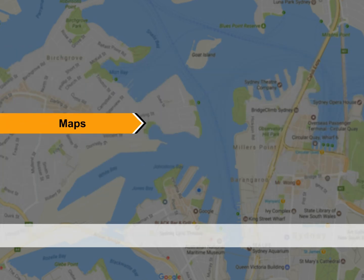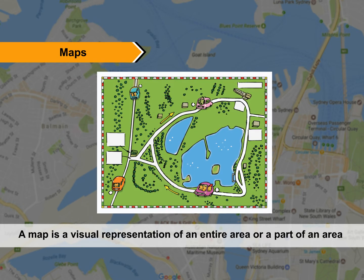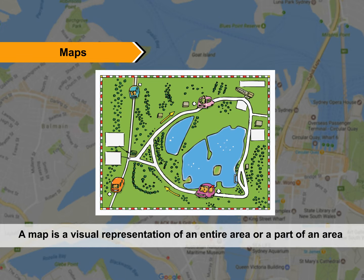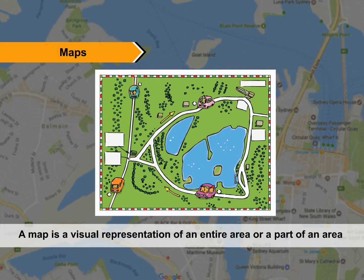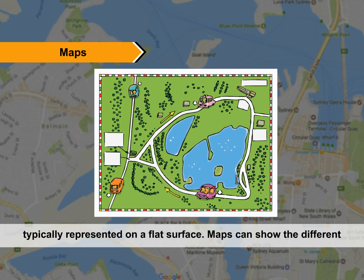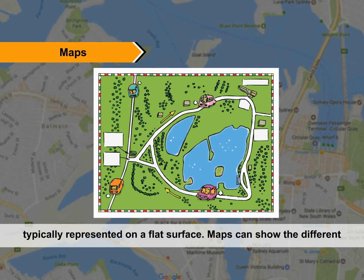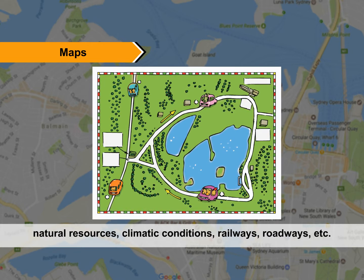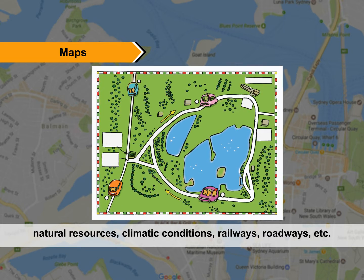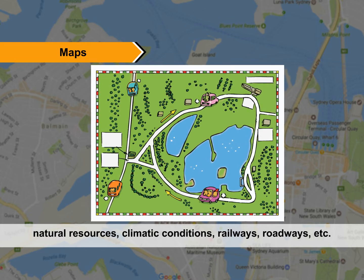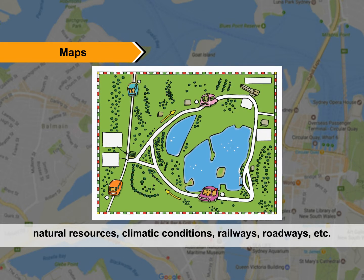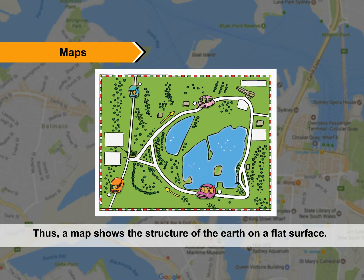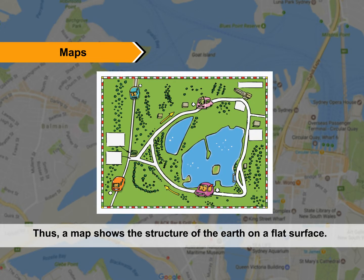A map is a visual representation of an entire area or a part of an area, typically represented on a flat surface. Maps can show the different types of lands, natural resources, climatic conditions, railways, roadways, etc. Thus, a map shows the structure of the earth on a flat surface.